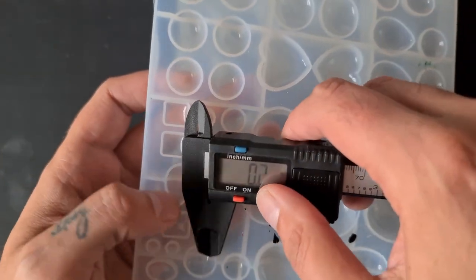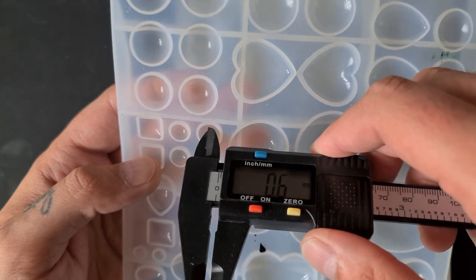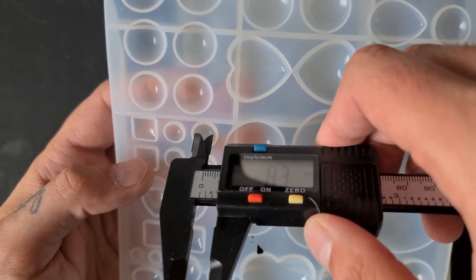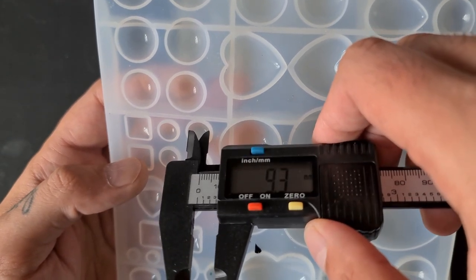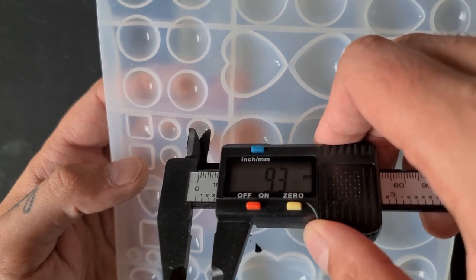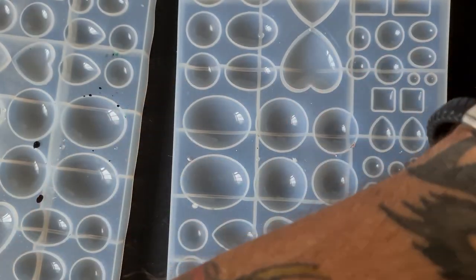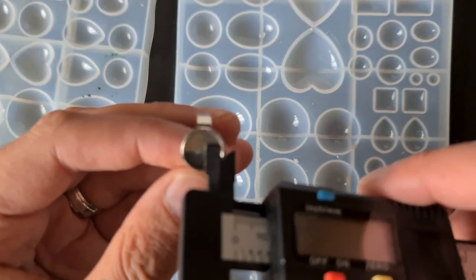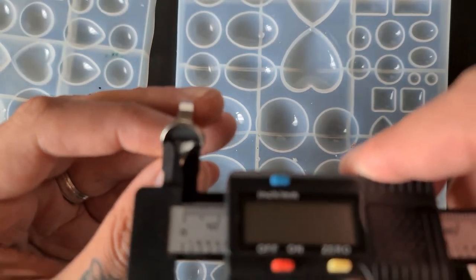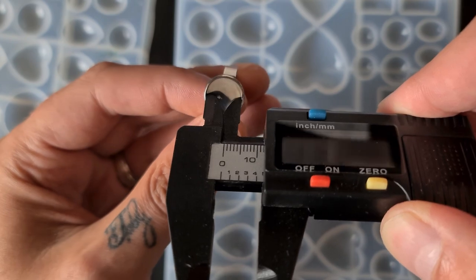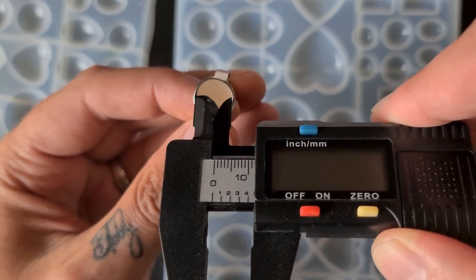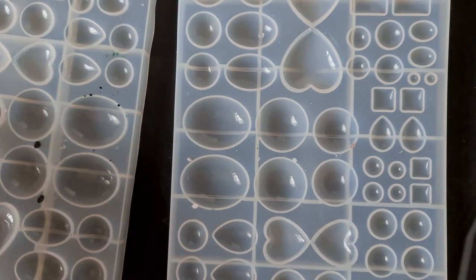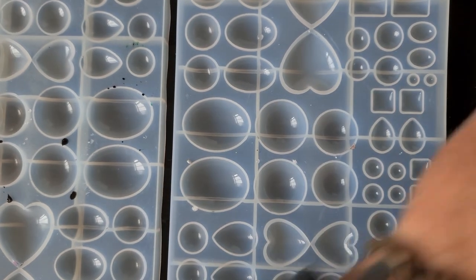And what this allows us to do is measure not only the pieces that we've made, but on this side here, it's a really handy tool to have. If we zero that, we can actually measure the inside of our cavities. So then we can search for that size on Amazon and you can also do that inside your blanks as well to find the right size of pieces for the cavities in the mold.